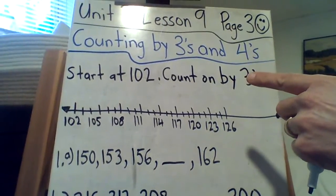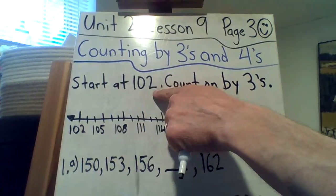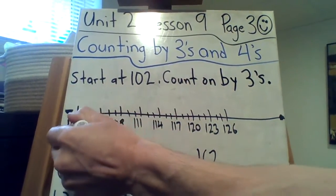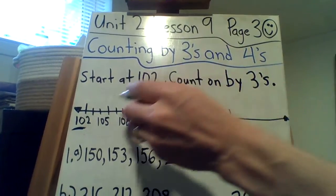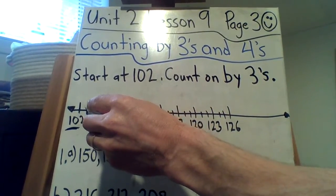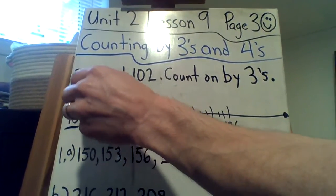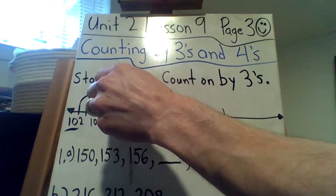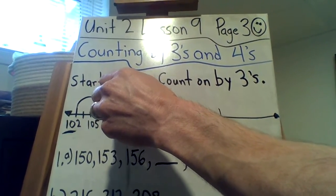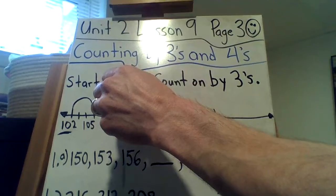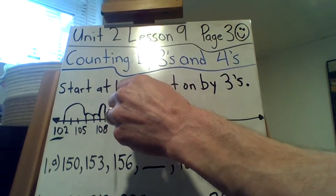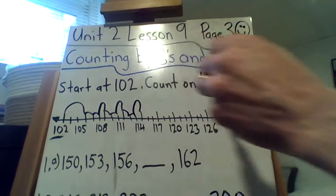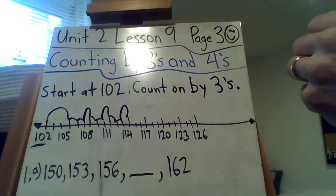So, number 1, the quick review here says, start at 102. There it is right there. Count on by 3's. Okay? So, you have 102, 103, 104, 105, 106, 107, 108, 109, 110, 111, 112, 113, 114. See, every 3rd one I'm making the big hop.